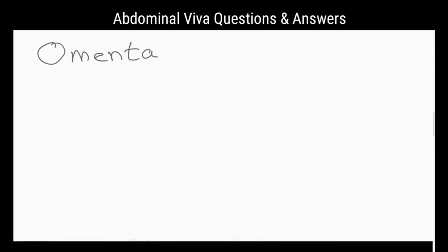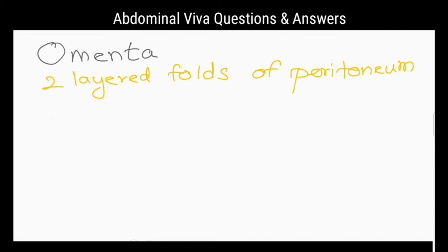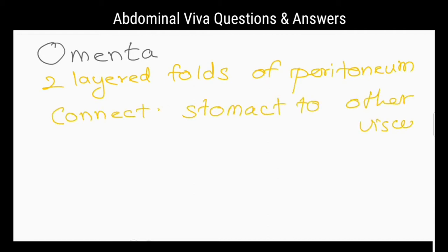What are omenta? They are two-layered folds of peritoneum connecting parts of the intestines to the posterior abdominal wall.